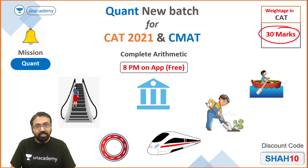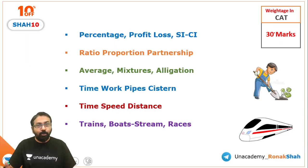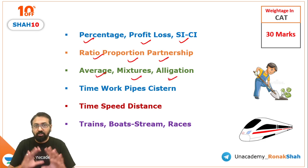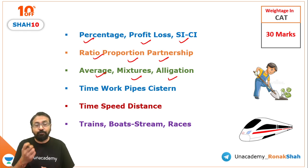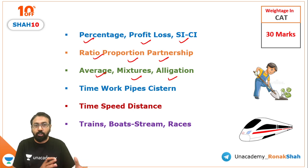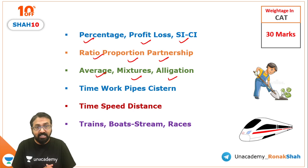Let me quickly tell you what topics will be covered as part of this batch. We are going to cover percentage, profit and loss, SI/CI, ratio, proportion and partnership, average, mixture, and allegation. All varieties of questions will be covered, and all the shortcuts will also be discussed. For example, with shortcuts for averages, certain questions can be solved in about 15 to 20 seconds instead of the normal 40 to 50 seconds.